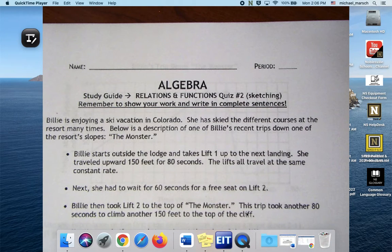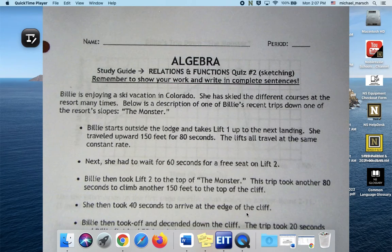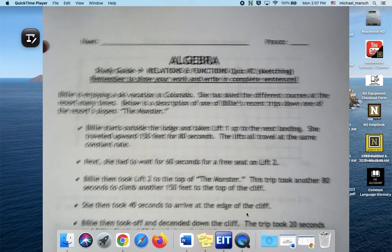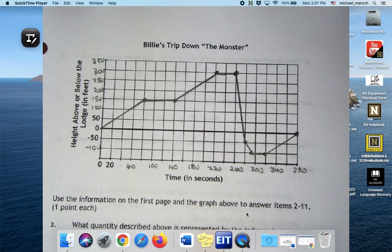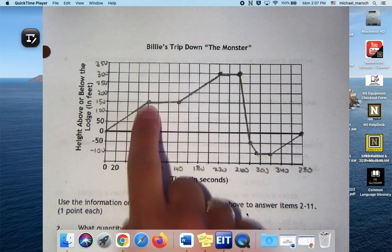We have somebody at a ski lodge and she's taking lifts and skiing. Everything is relative to zero, which is the height of the ski lodge. She starts outside the lodge, takes the lift up to the next landing. She traveled 150 feet in 80 seconds, so you should be right here at 80 and 150 feet for your first point.